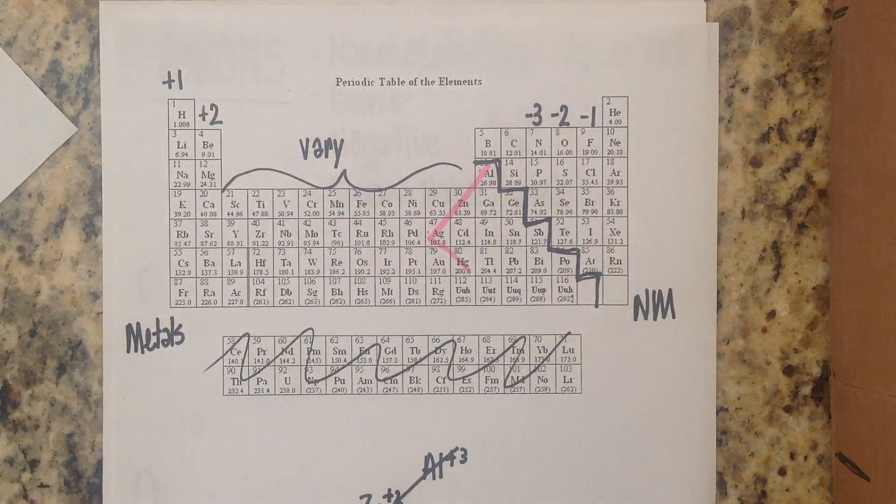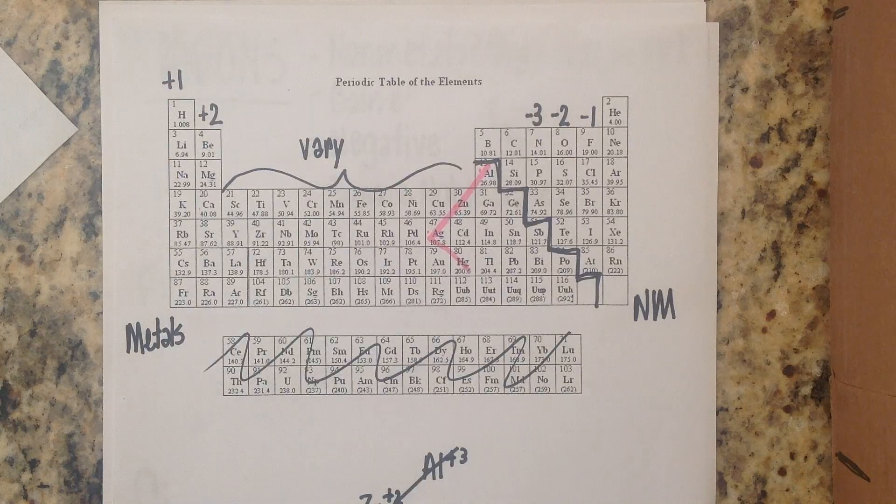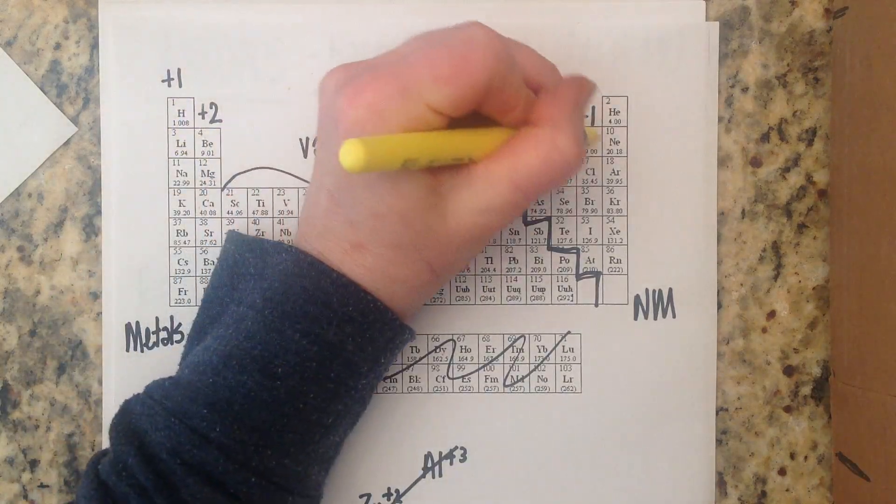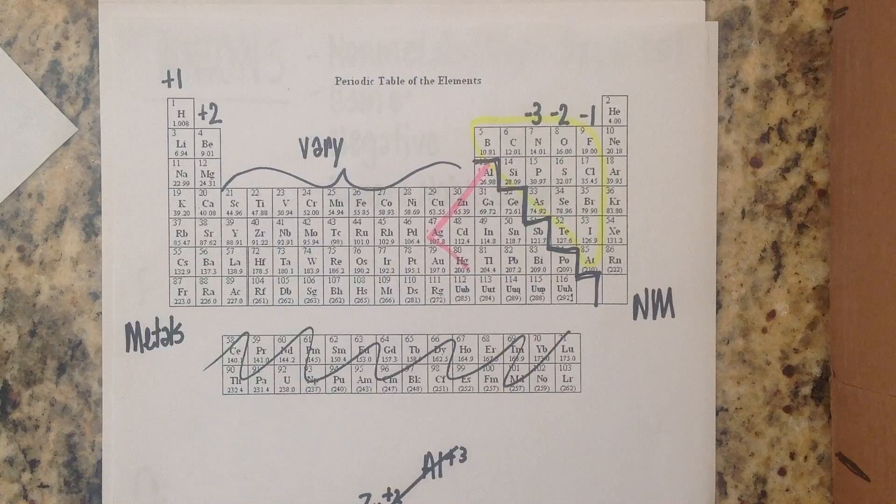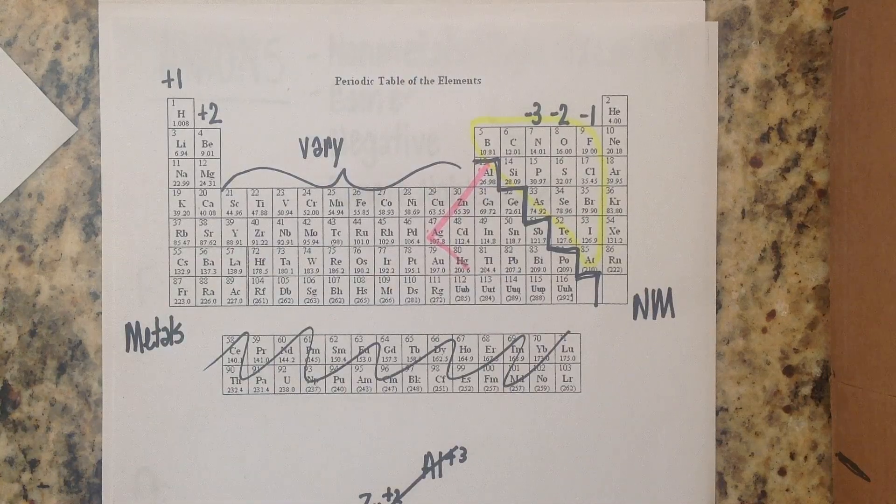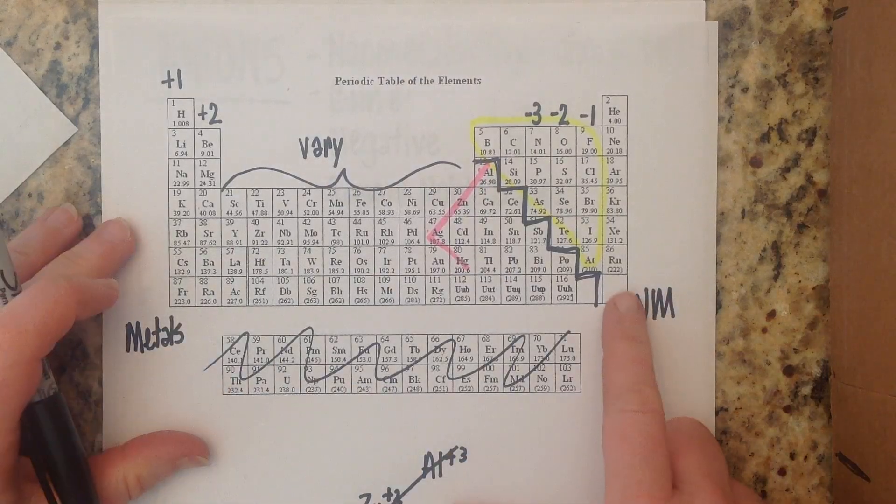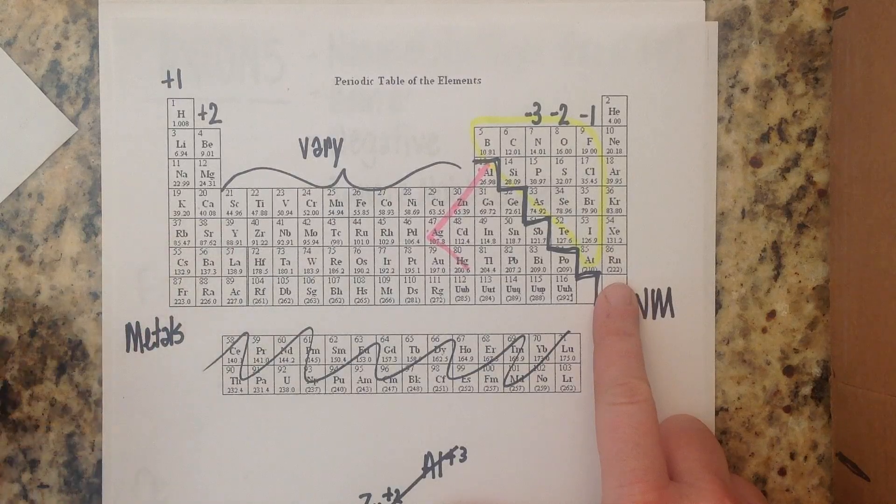So what we are looking at when we're talking about the nonmetals are really this group right here. The reason I did not highlight this very last column, these are the noble gases and they already have a full octet. They have eight valence electrons.